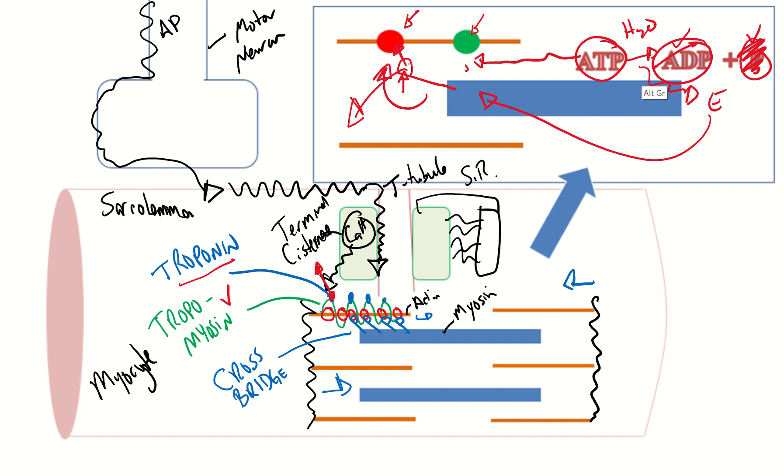Then the next step is you're going to kick off the ADP. When the ADP gets kicked off this myosin head will perform a power stroke and this actin is going to slide over the myosin.